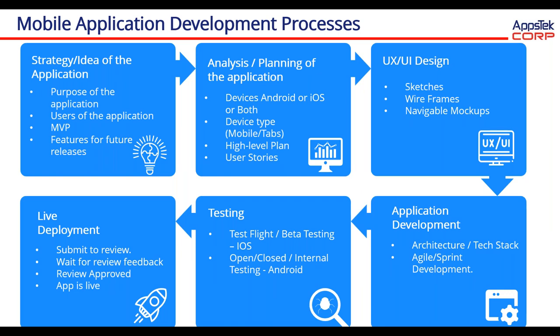Now looking at the complete development process. Application development basically starts with the concept of the application and what problem it is required to solve. The key steps to identify in this approach are: what is the purpose of the application, who are the users, what is the minimum viable product, what are the must-have features versus nice-to-have features, which features to be released in which release, and planning for multiple releases in this stage.